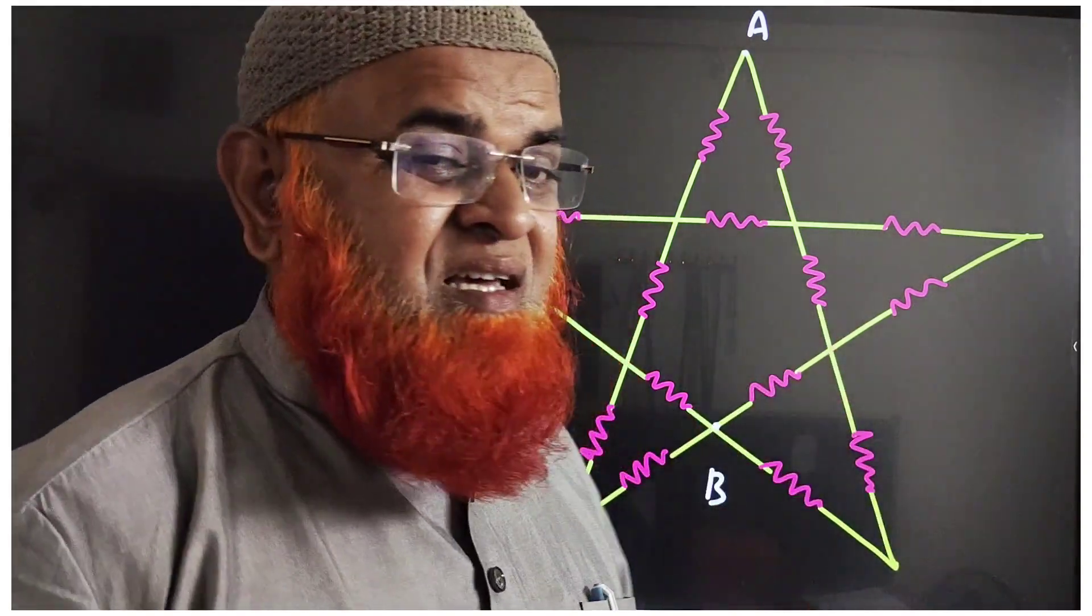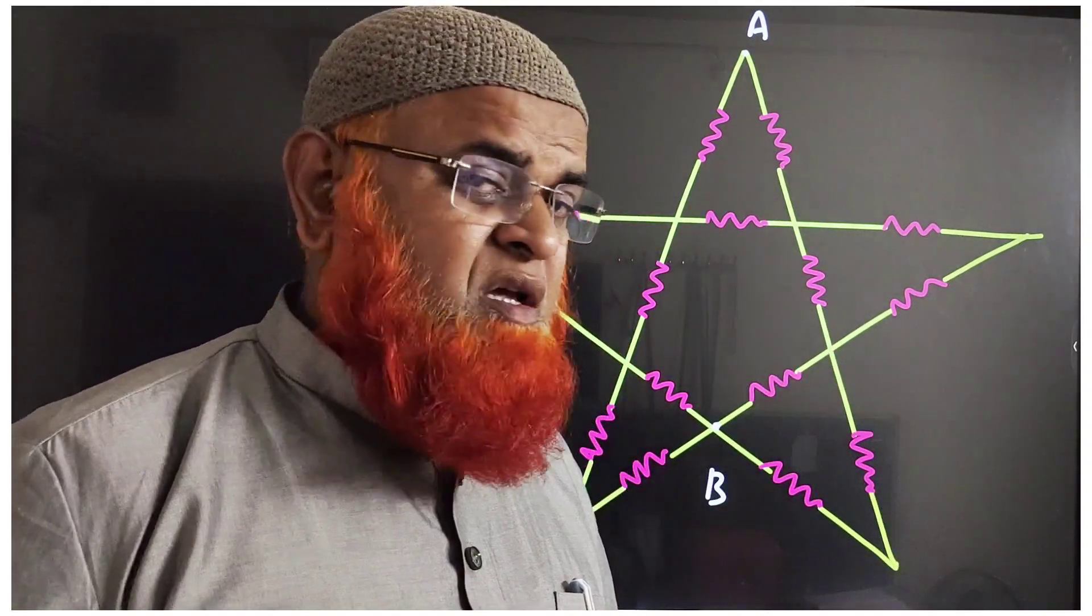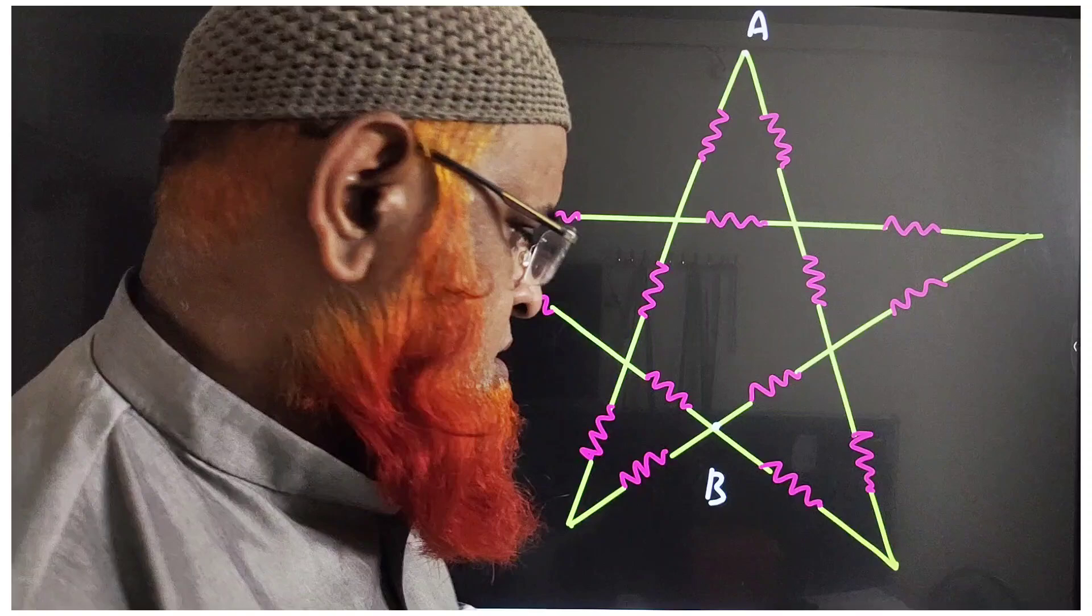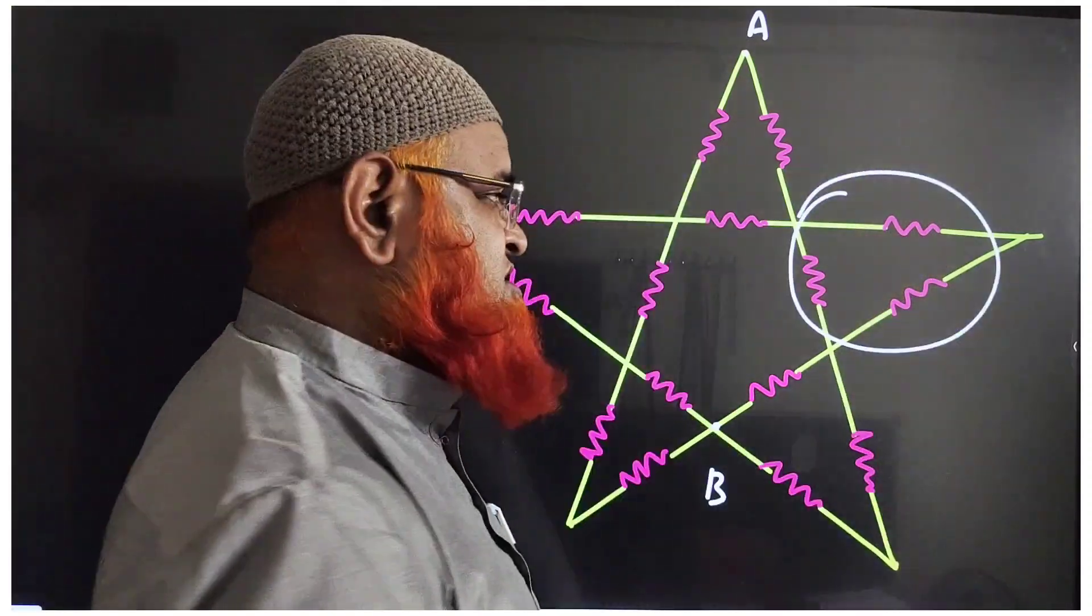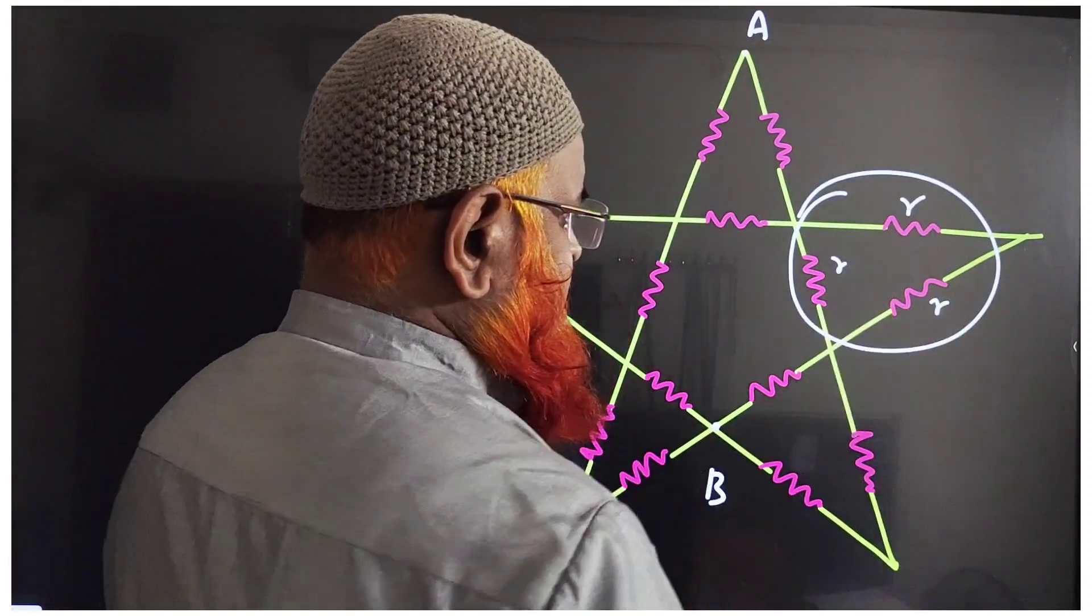Dear friends, do you know that this is a complex friction bridge? We can solve it easily. How? Let me discuss it. See here, these three resistors are in such a way that this is r and this is 2r.